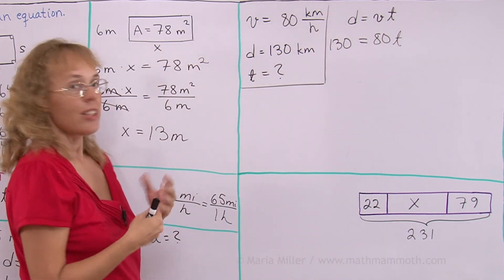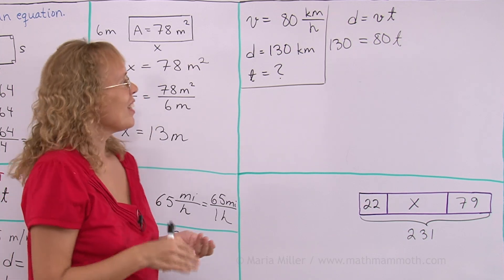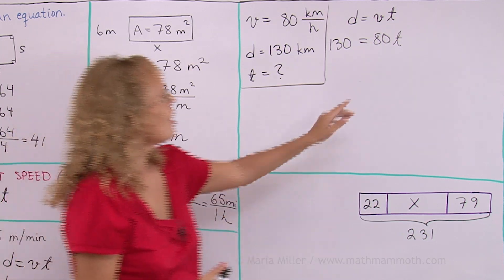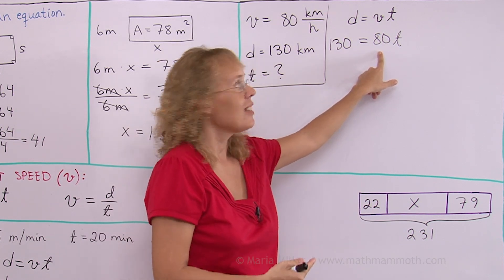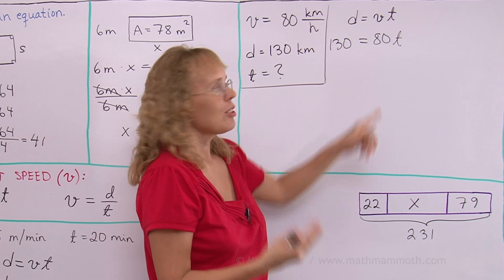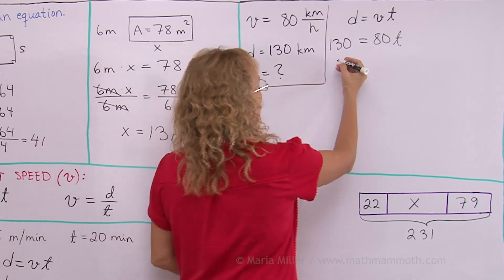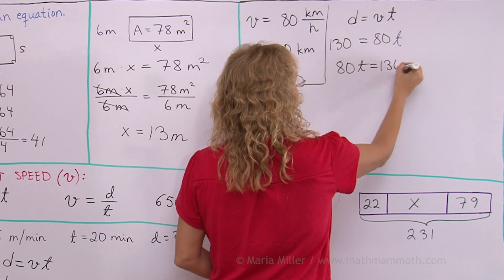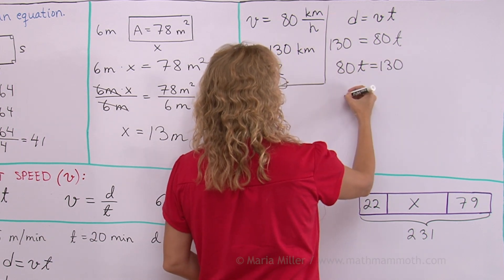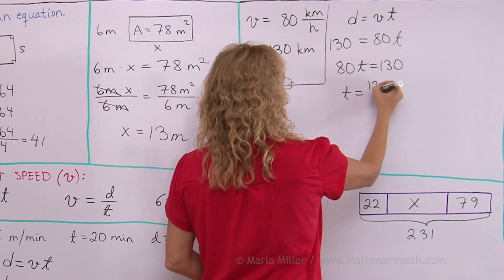And now you see you've got a very simple equation. You know how to solve that because there's a variable multiplied by something. So obviously you need to divide by 80, both sides of the equation, to get your answer. Let me first flip these sides. 80T equals 130. Now divide both sides by 80. And T equals 130 over 80.